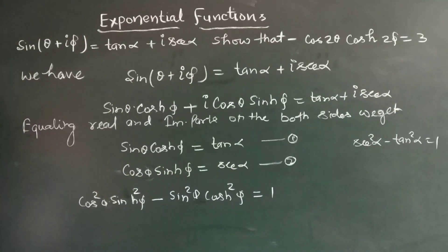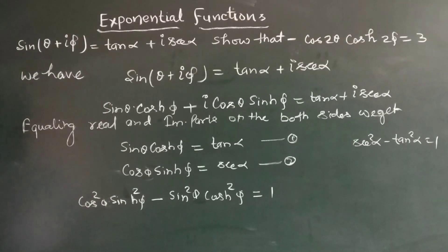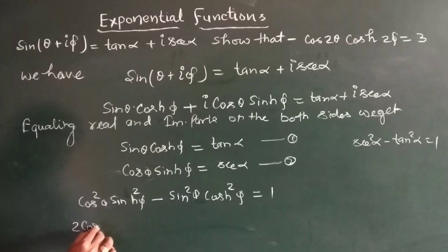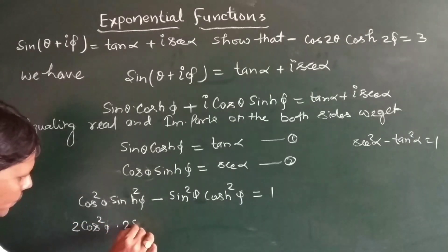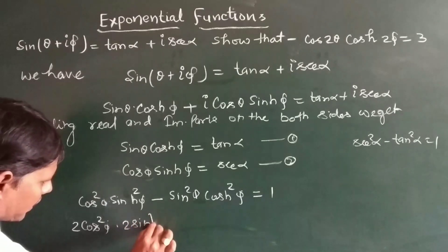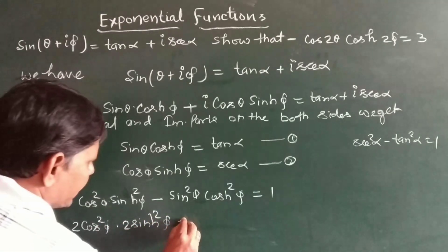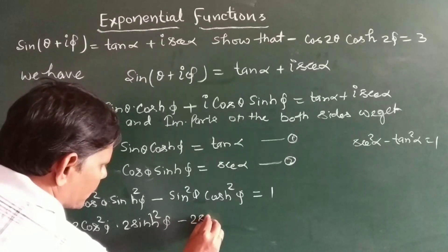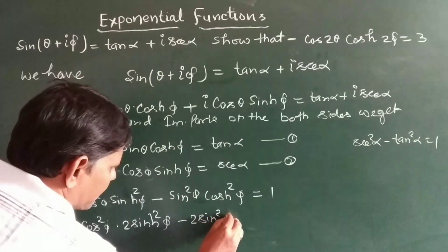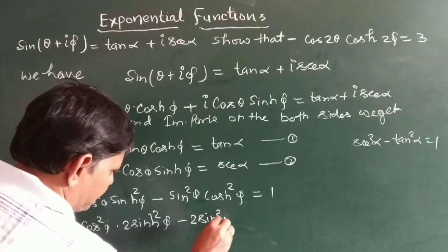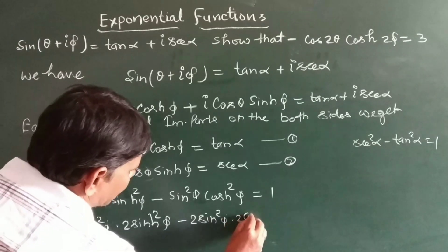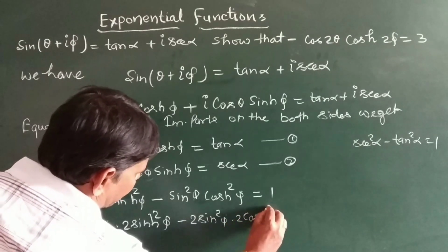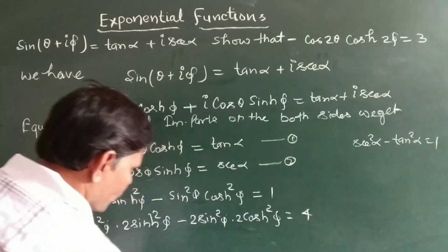Then we may write: 2cos²θ·2sinh²φ minus 2sin²θ·2cosh²φ is equal to 4.